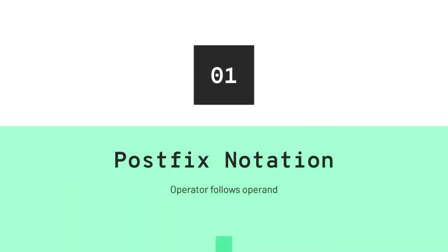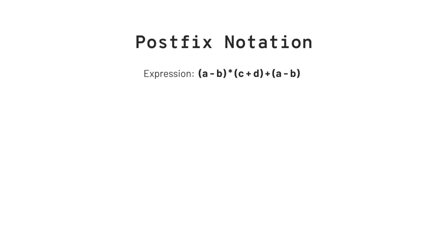A postfix notation is where the operator follows the operand. We have an expression on screen: (a-b) * (c+d) + (a-b). The operands are a, b, c, d, and again a and b. The operators are minus, multiplication, plus, plus, and minus. With this many operators, there has to be an order of precedence — the order of execution of an operation associated with a given operator.